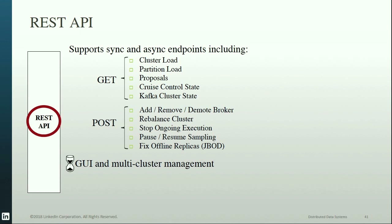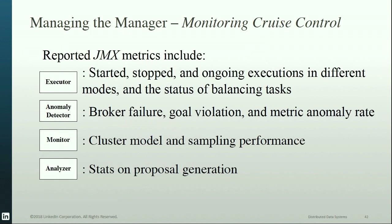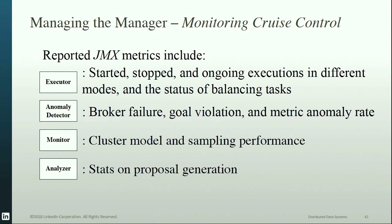Going forward, Cruise Control would like to open source its graphical user interface to enable users to aggregate the management of multiple Kafka clusters at a single central location. Cruise Control provides a number of JMX metrics on a user-defined port. Selected metrics include executor metrics reporting started, stopped, and ongoing executions in different modes; the status of balancing tasks such as in-progress, pending, stopped, aborted, or aborting; anomaly detector metrics providing the rate at which certain anomalies are detected; monitor metrics for cluster model generation and sampling performance; and analyzer metrics for proposal generation statistics.